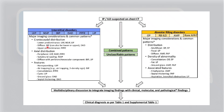Coming to imaging — craniocaudal distribution: lower predominance is seen in UIP, NSIP, and LIP. PPFE shows predominantly upper predominance, while BIP and DAD show a diffuse pattern. Regarding peripheral distribution, peripheral distribution is seen in UIP, NSIP, and PPFE. Subpleural sparing is seen in NSIP, which is the characteristic feature of NSIP on radiology. Diffuse with peribronchovascular component can be seen in BIP and LIP.